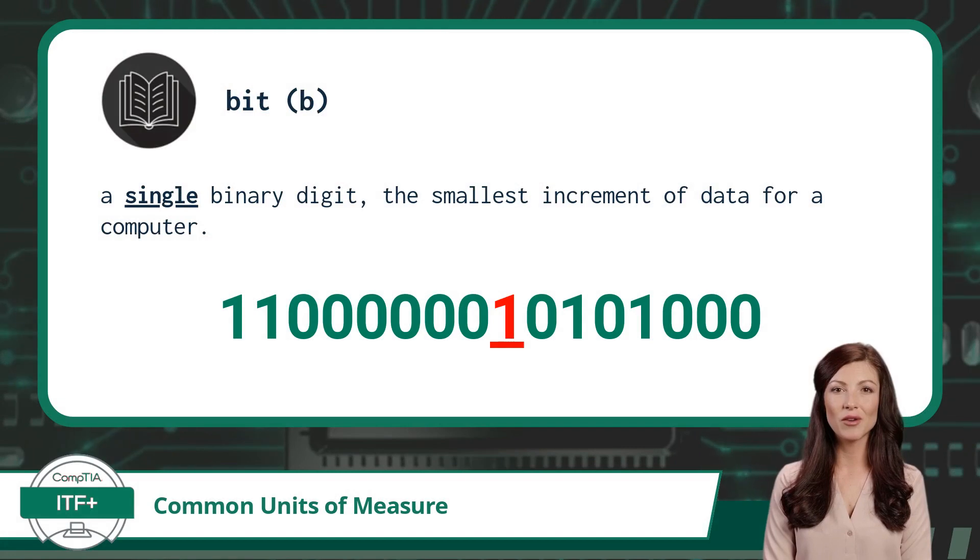Up until now, we have been referring to a single zero or one as a binary digit, but a more common name for this quantity of data is a bit. A bit is a single binary digit and is the smallest increment of data for a computer.